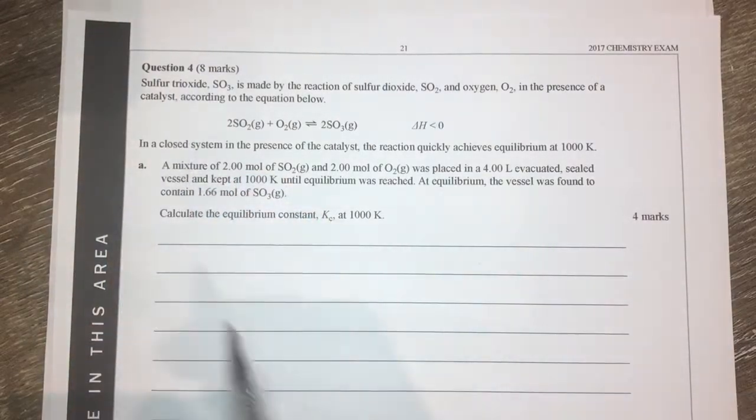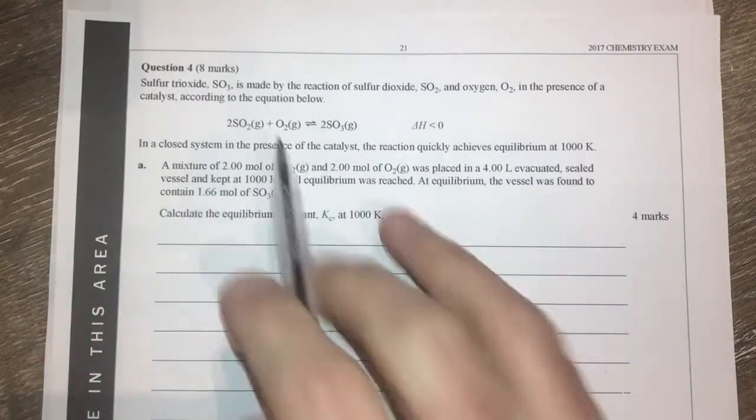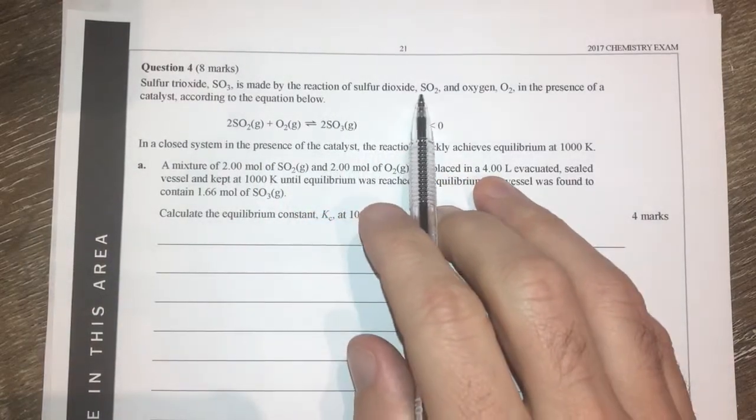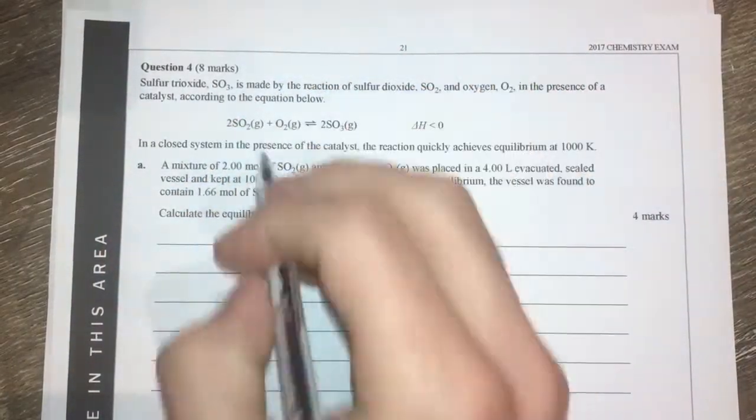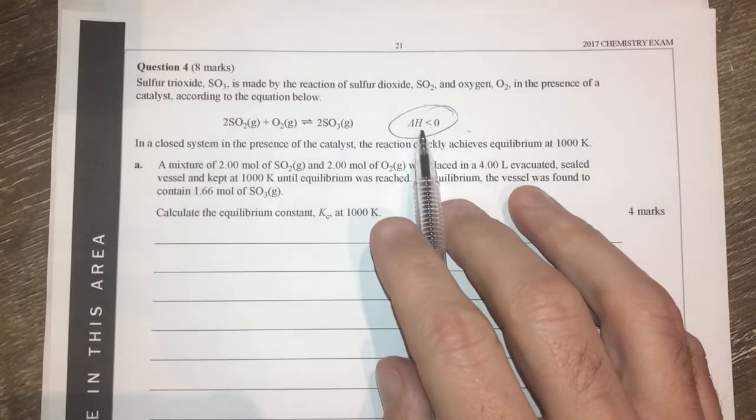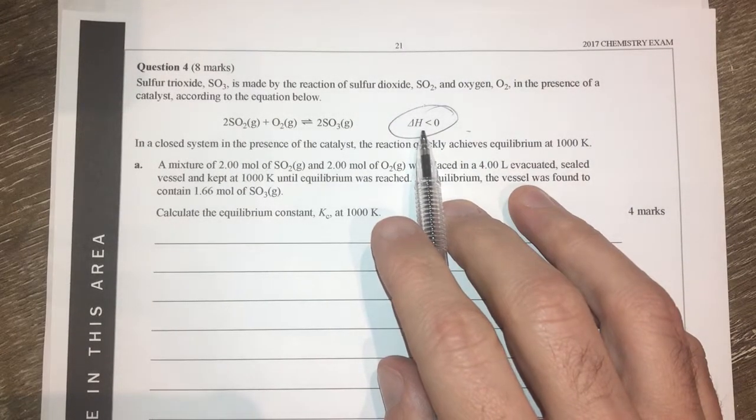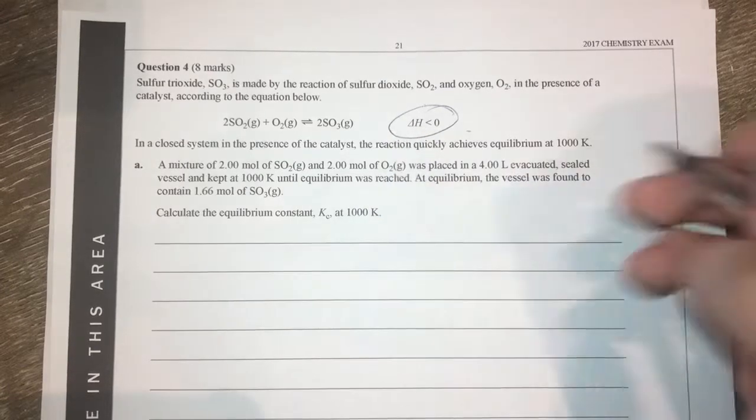Question four in our short answer. Sulfur trioxide SO3 is made by the reaction of sulfur dioxide and oxygen in the presence of a catalyst according to this equation here. Nice to know that it's an exothermic reaction. Delta H is less than zero, so therefore it's exothermic.